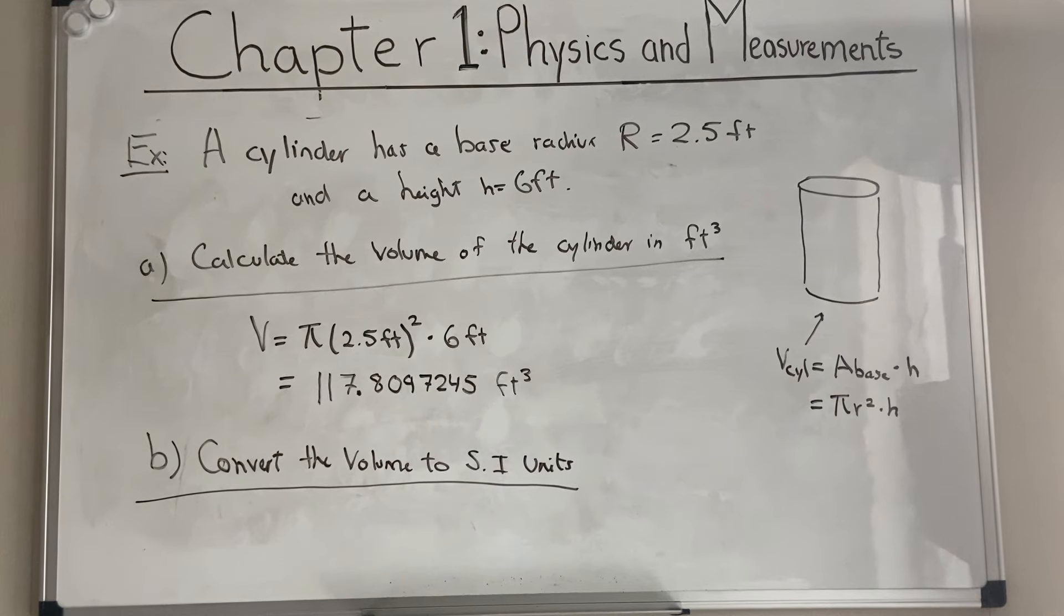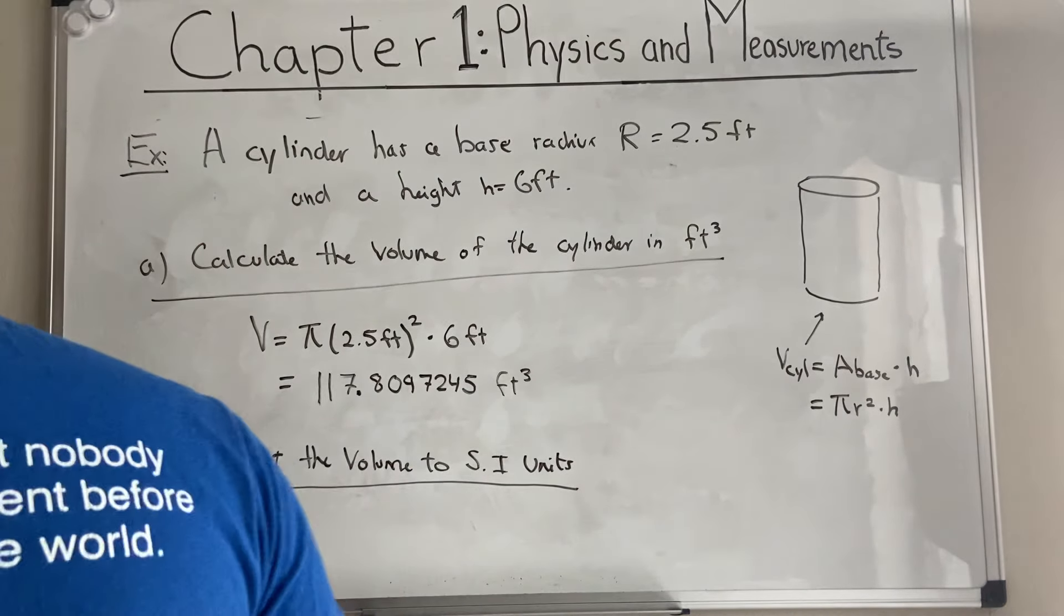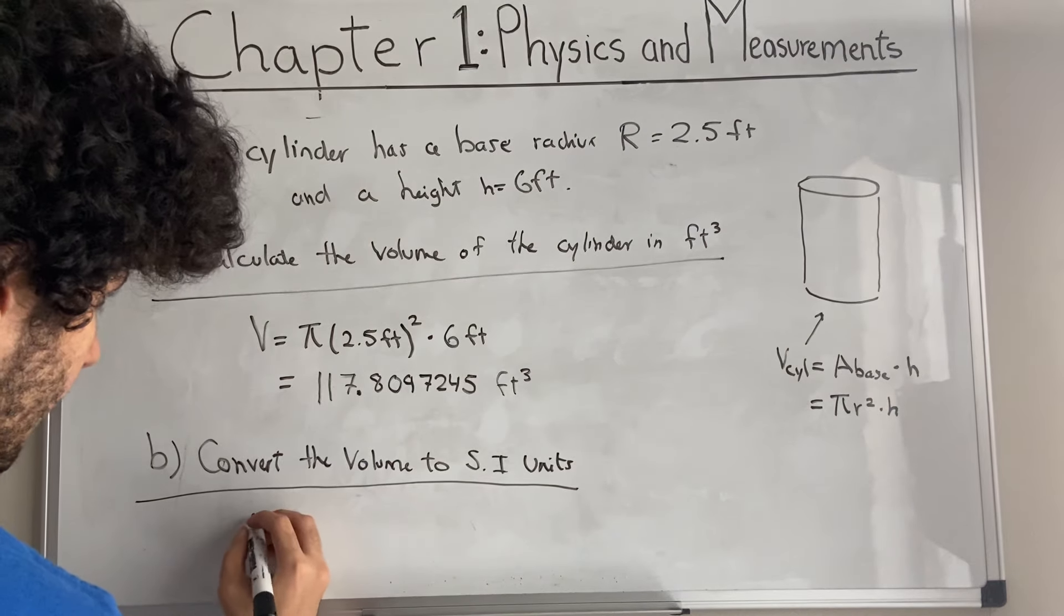I'm actually going to just look that up. I'm not very used to using feet. Feet to meters. So in one foot, we have 0.3048 meters. And that could have been written in the other way, too. But we're going to work with it in this way, because that's what first came up on the internet. One foot equals 0.3048 meters.